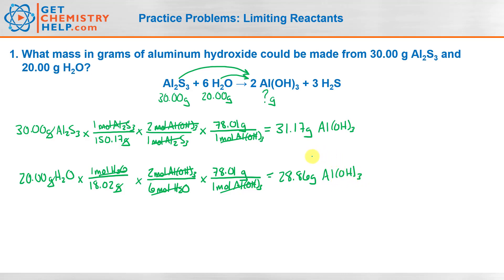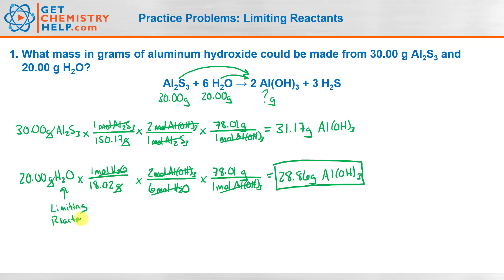So now the question is: how much aluminum hydroxide could you make? Is it 31.17, is it 28.86, or do you add them together? The answer is always whatever is the smallest amount — so 28.86 grams is how much aluminum hydroxide you can make. That tells us the limiting reactant was the water. The water was limiting us to only making 28.86 grams of the product; there was enough aluminum sulfide to keep going and make up to 31.17. So the water ran out, and that means aluminum sulfide is the excess reactant.